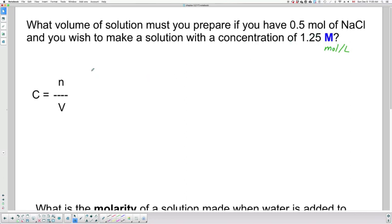Okay, so let's list our information. Do we have n? Yes, we do. It's 0.5 mole. So 0.5 mole of NaCl. Do we have V? No, that's what we're asking, we're asked to find. We're asked to find the volume of solution.